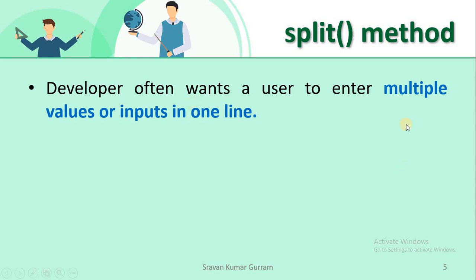Developers often want a user to enter multiple values in one line. In the last video we covered how to receive one value using the input method dynamically. If you want to receive two values, we wrote two input statements. But now what I want to do is receive multiple values without writing multiple input statements — with a single input statement I want to receive multiple values.